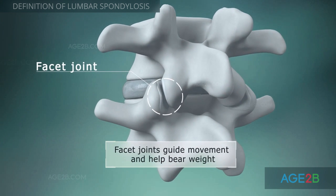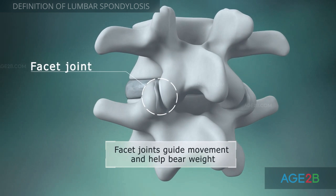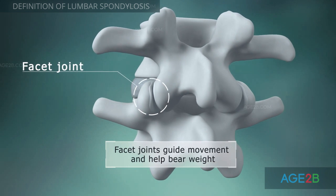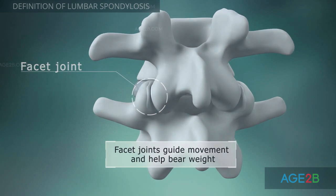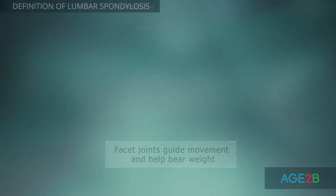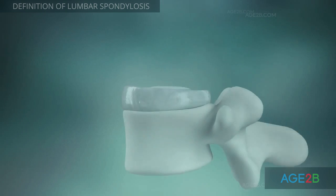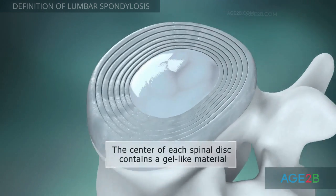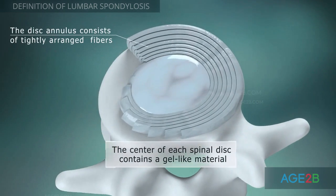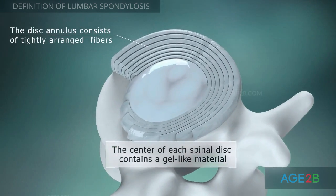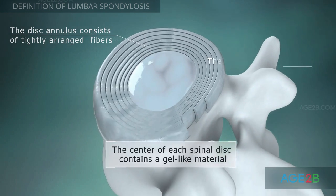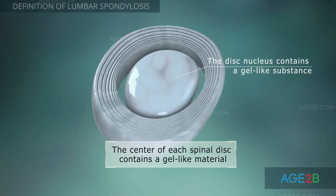Facet joints are located between each pair of vertebrae. They guide and limit the movement of the spine, providing stability and bearing a share of the load on the spine. Each spinal disc has a tough outer shell called the annulus. The center portion of the disc, the nucleus, contains a gel-like substance.